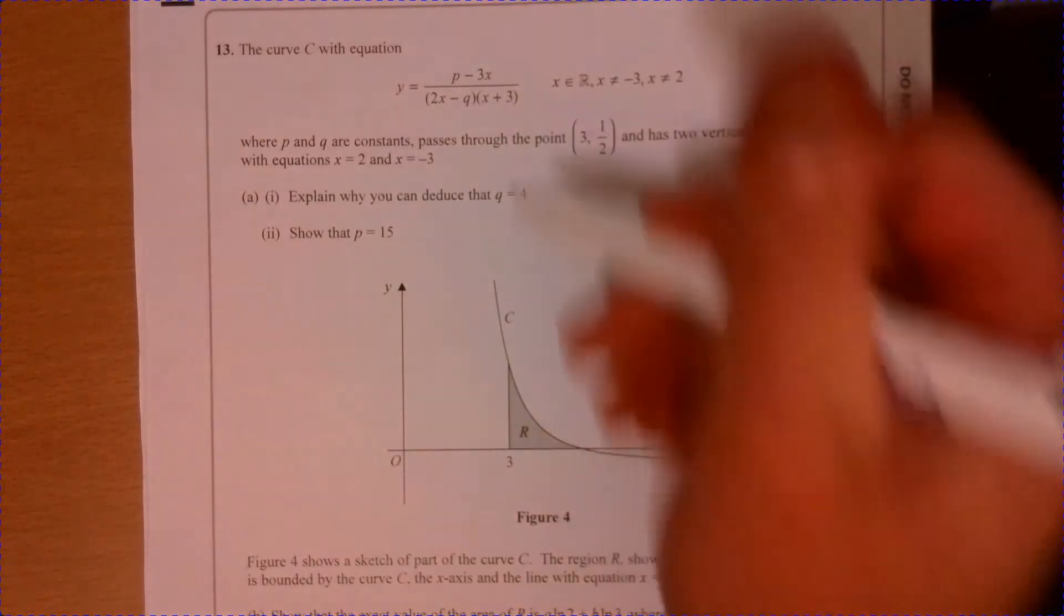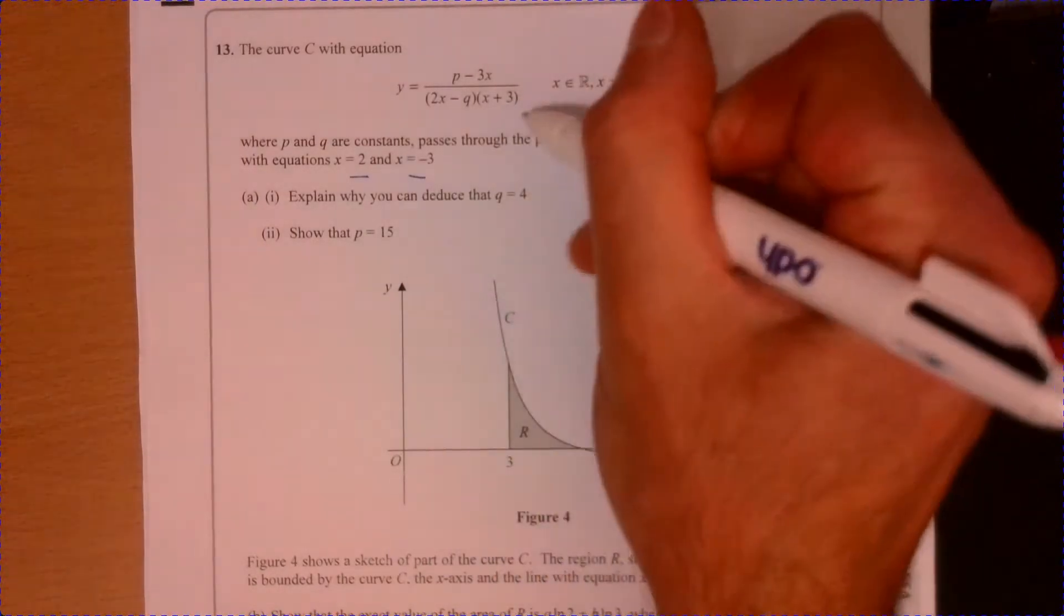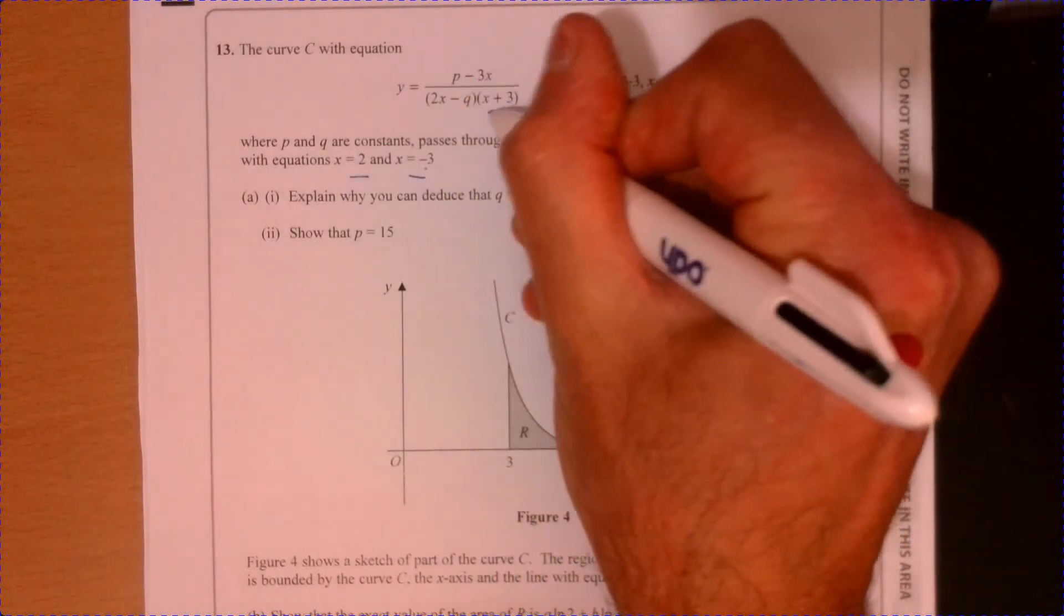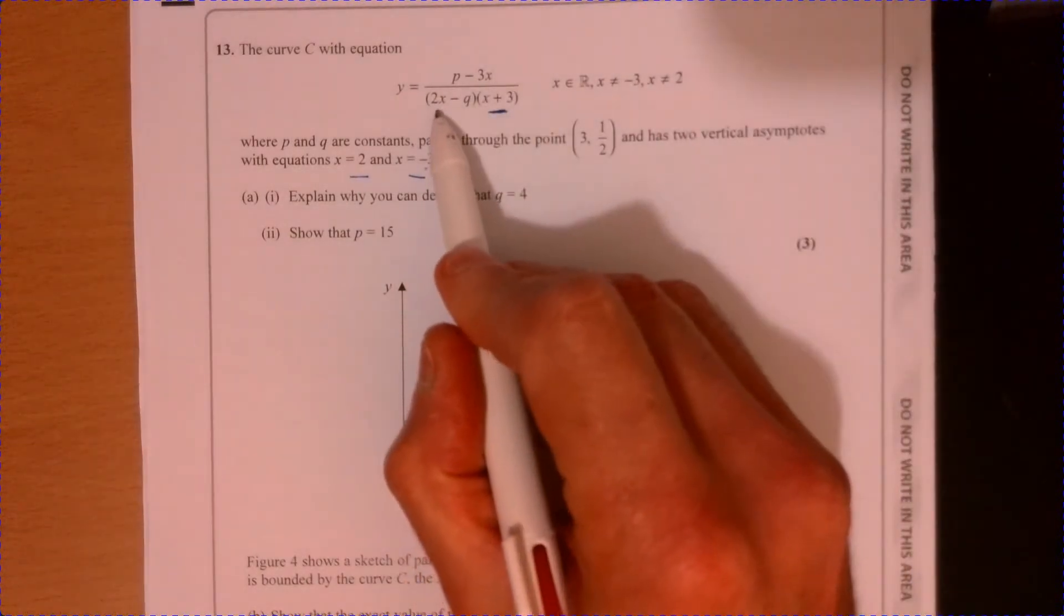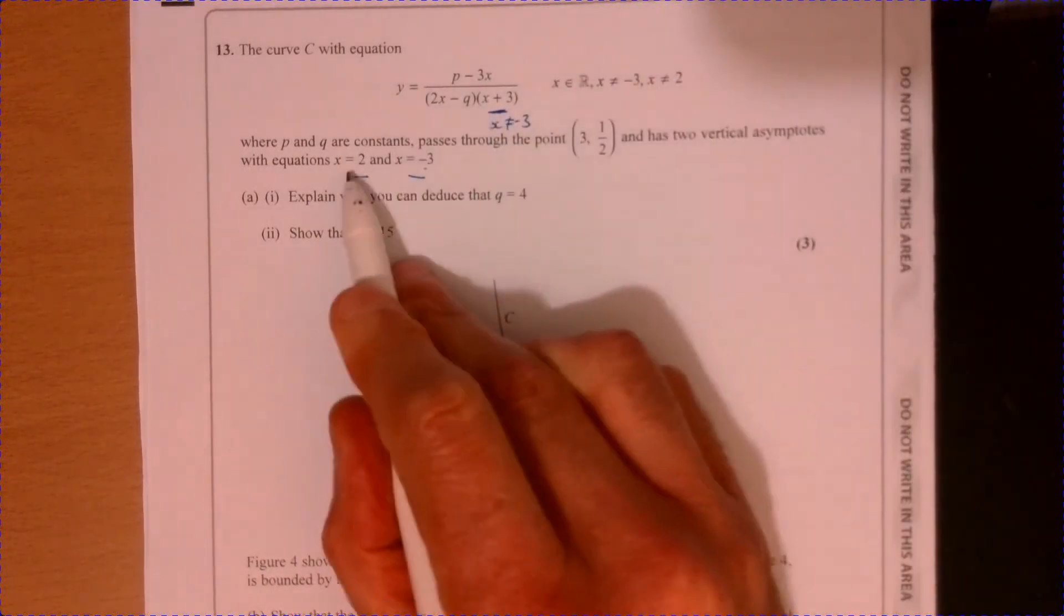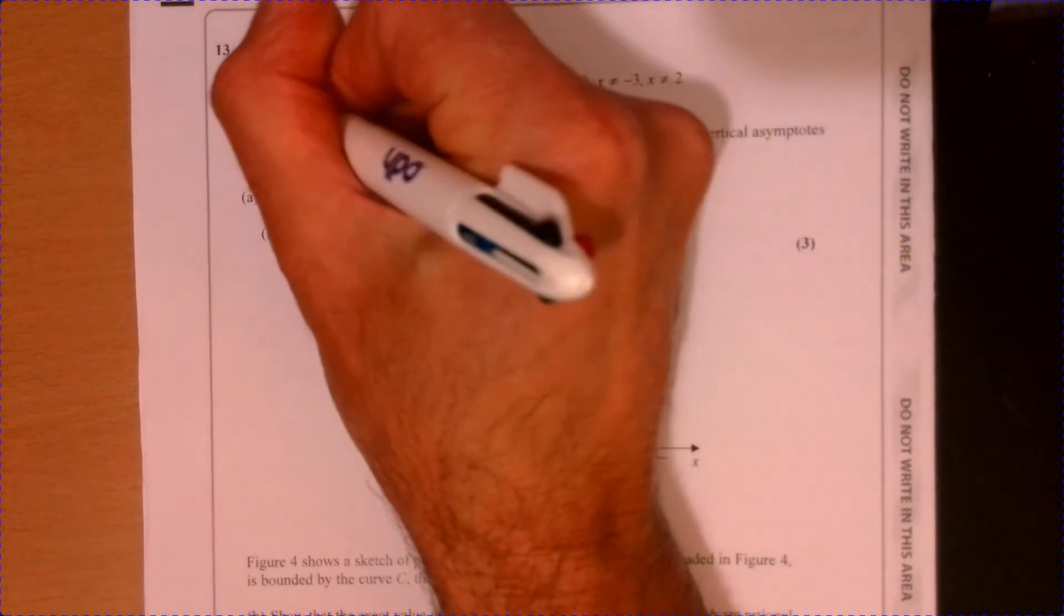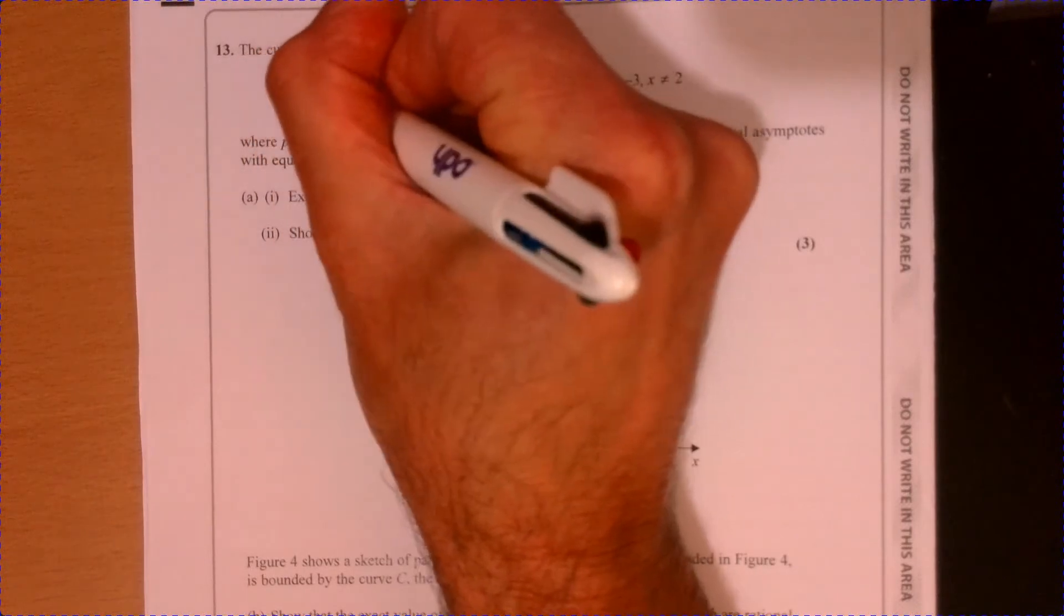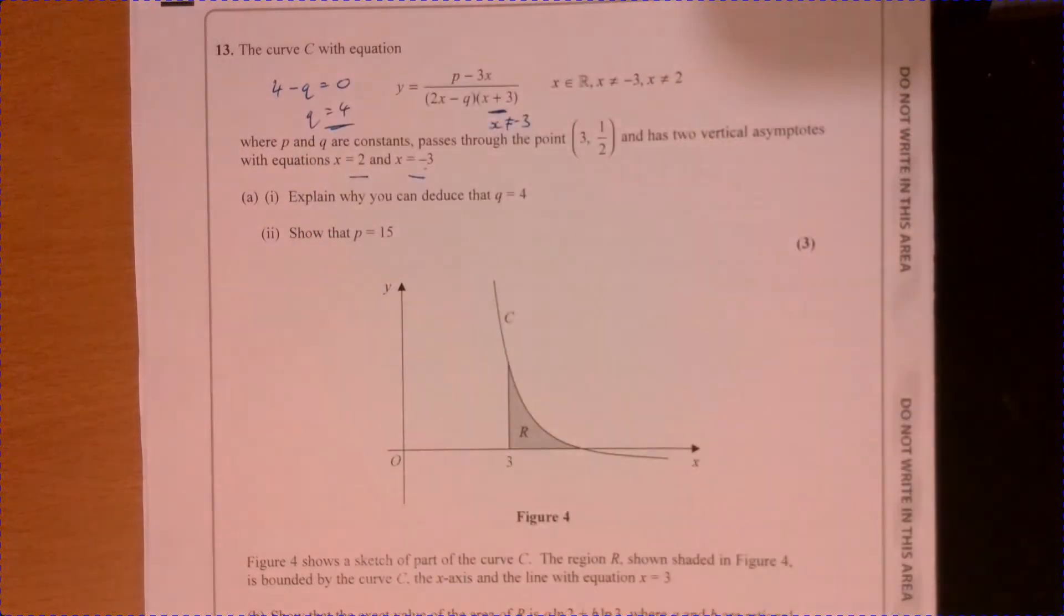All right, question 13. So we're told we've got two asymptotes. Now, this one comes from this point just here. So we know that x equals 2 is an asymptote associated with this one. So x obviously cannot be minus 3. So it's got to be this one here. In other words, when x is 2, this is going to be equal to 0. So 4 take away q must be 0. Therefore, q must be 4.